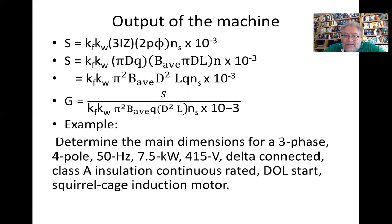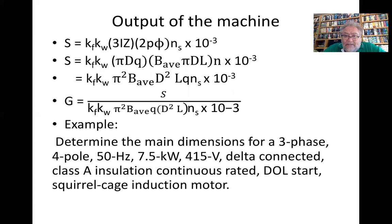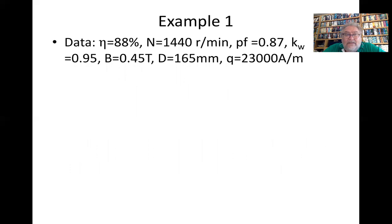Let's look at an example. Determine the main dimensions for a three-phase 7.5 kilowatt, 450 volt, delta connected, class A insulation, continuous rated, direct online starting, squirrel cage induction motor.